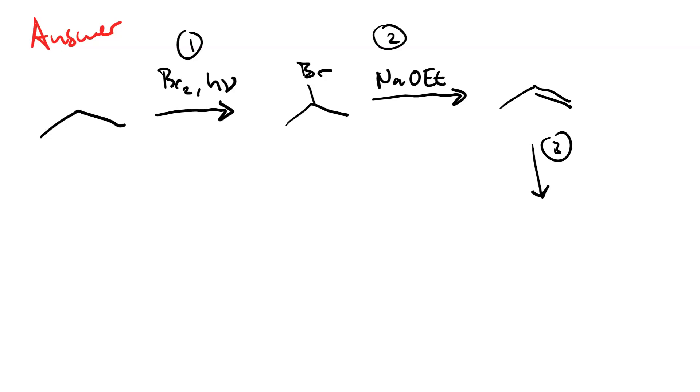Step three, we make the halohydrin. By reacting with Br2 in water. The OH group adds Markovnikov. And, the Br adds anti-Markovnikov.